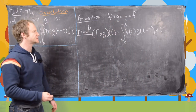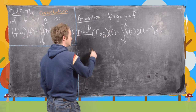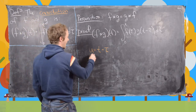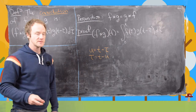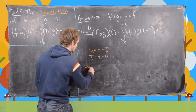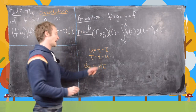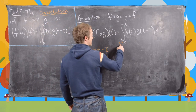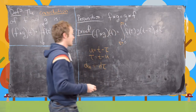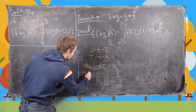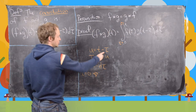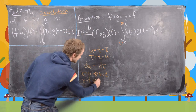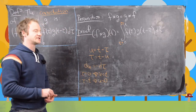For this we want to use a u-substitution: u equals t minus τ. That makes τ equal to t minus u, and du is minus dτ, so dτ is minus du. Now notice the bounds: τ goes from 0 to t. If τ equals 0, then u equals t; and if τ equals t, then u equals 0. So that changes the bounds of integration as well.